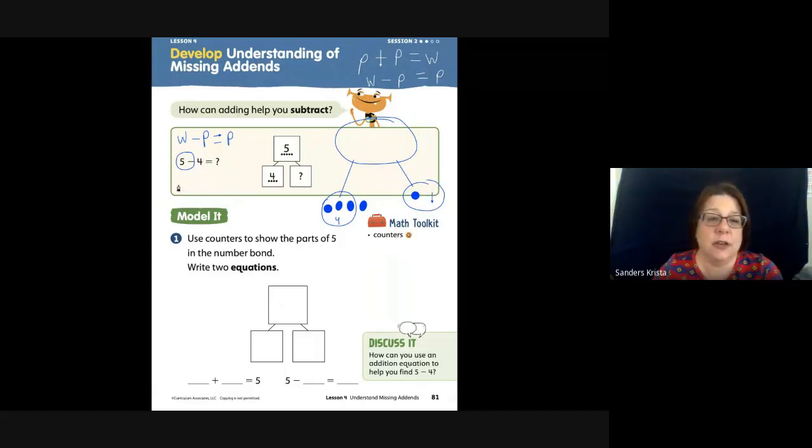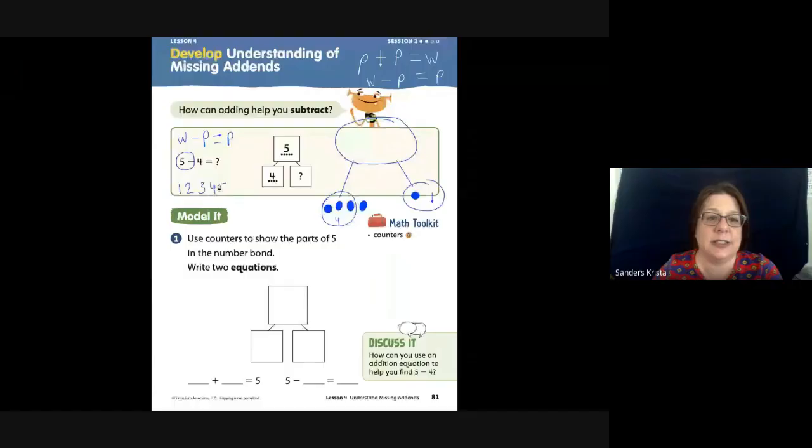I can use my count on strategy. I can make a number line. One, two, three, four, five, six, seven. So if my whole is five, I'm going to circle five. That's my whole.